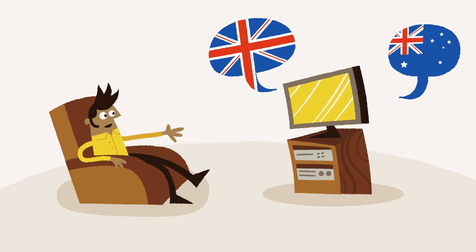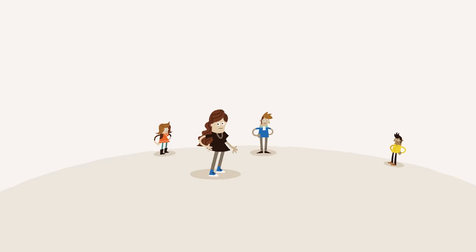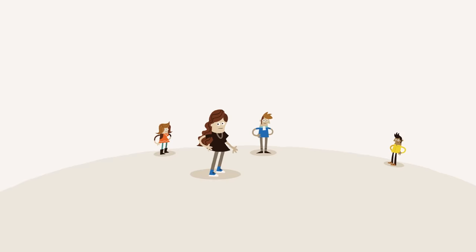try to listen out for the different accents and the vocabulary they use to see if you can guess where the people come from. As far as Cambridge English writing and speaking exams are concerned, you can use the standard English you prefer. Cambridge English exams are international, so it doesn't matter which English accent you have or what vocabulary you use. Just remember to be consistent — stick to one type and don't mix them up.